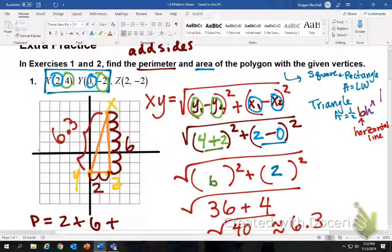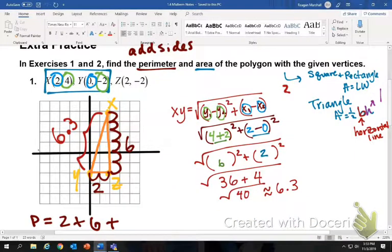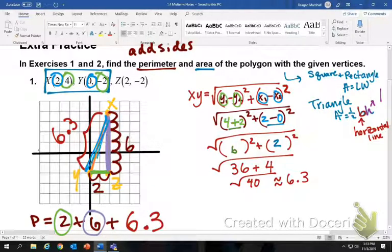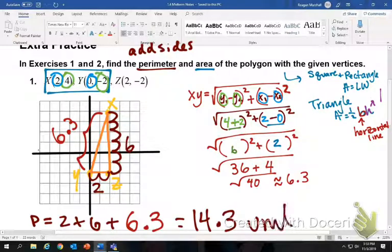You don't circle that because that's not the answer. All we found was the length of x, y. So to find the perimeter, you're going to add it in. So far we have 2, which is this bottom side, and then we have 6, which is the vertical side, and then we have 6.3, which is the side we just found. So we add them all together, 14.3, and then it would be units. Perimeter is in units, it's one-dimensional, it's linear because you're just measuring the outer shape.